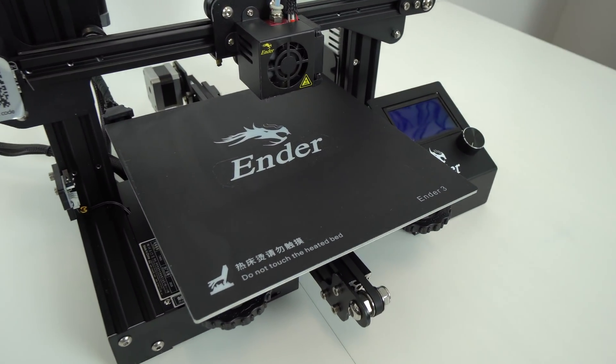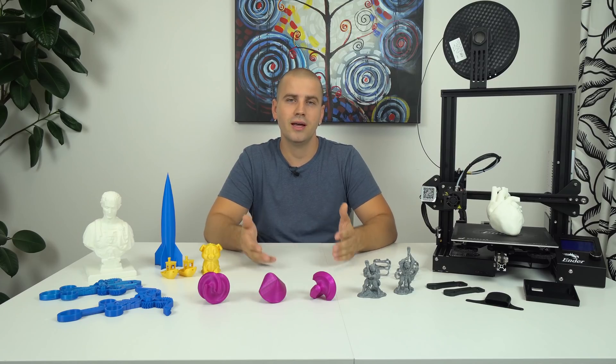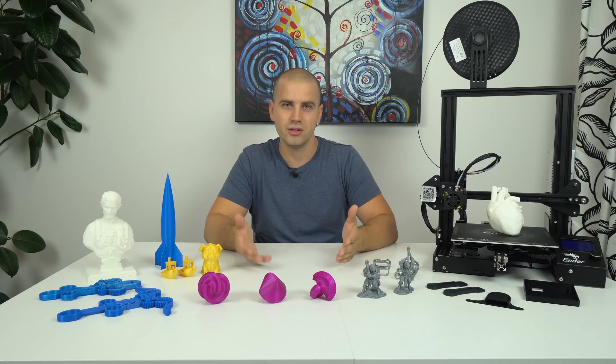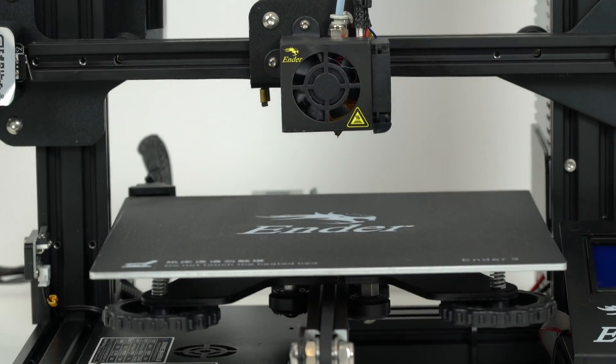For printing surface, Ender 3 is using this pad, similar to Buildtak. Also there is no glass plate or auto level on this machine which I would like to see but for the price of $200 US dollars, with shipping included, I really cannot complain.